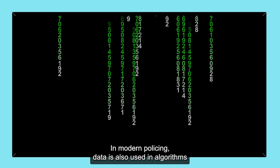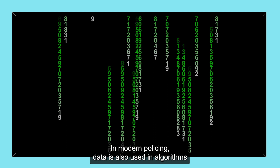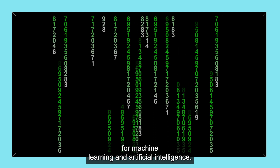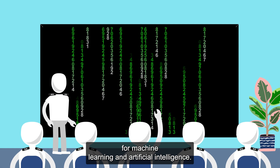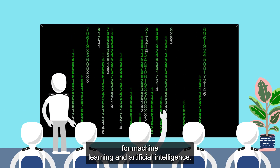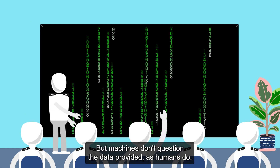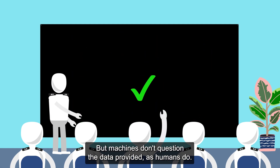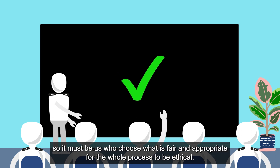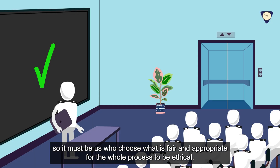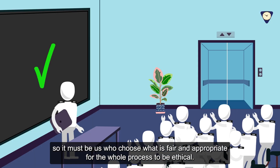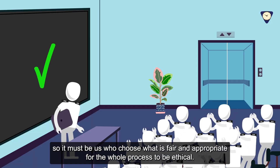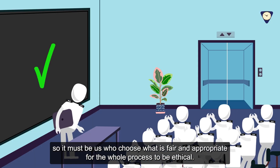In modern policing, data is also used in algorithms for machine learning and artificial intelligence. But machines don't question the data provided as humans do. So it must be us who choose what is fair and appropriate for the whole process to be ethical.